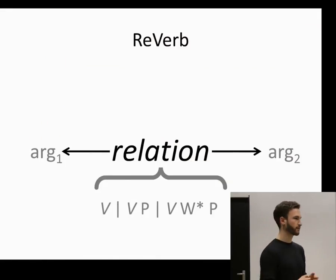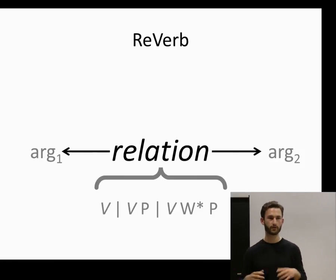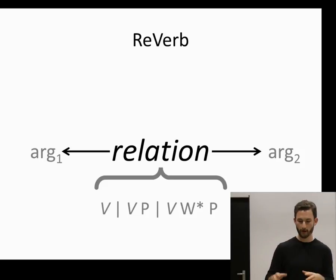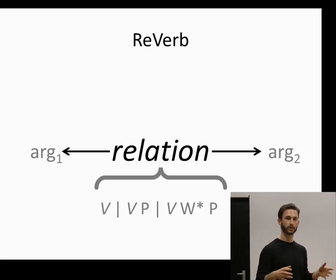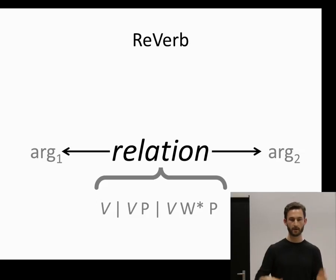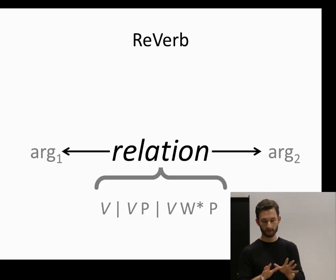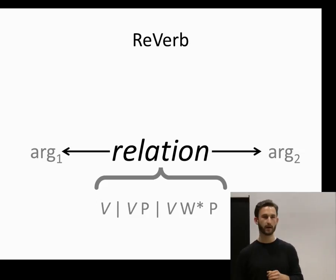Let's begin with inspiration. Just to recap what we've seen earlier, we saw ReVerb, which is an example of a shallow system that doesn't make use of any dependency parses but uses simply part-of-speech tags. ReVerb begins by trying to identify a relation with a verb and has this syntactic constraint — it's either a verb or a verb in a preposition — and then looks outwards at a noun phrase to identify the arguments.